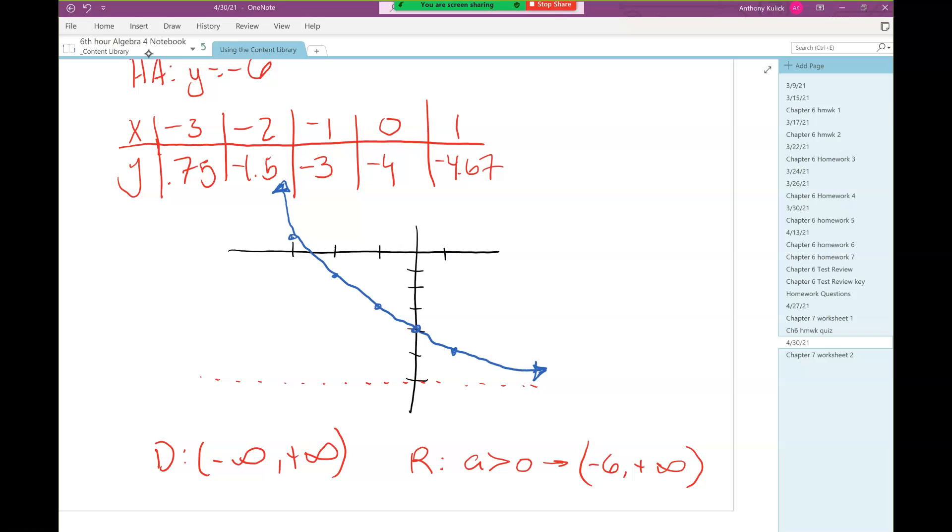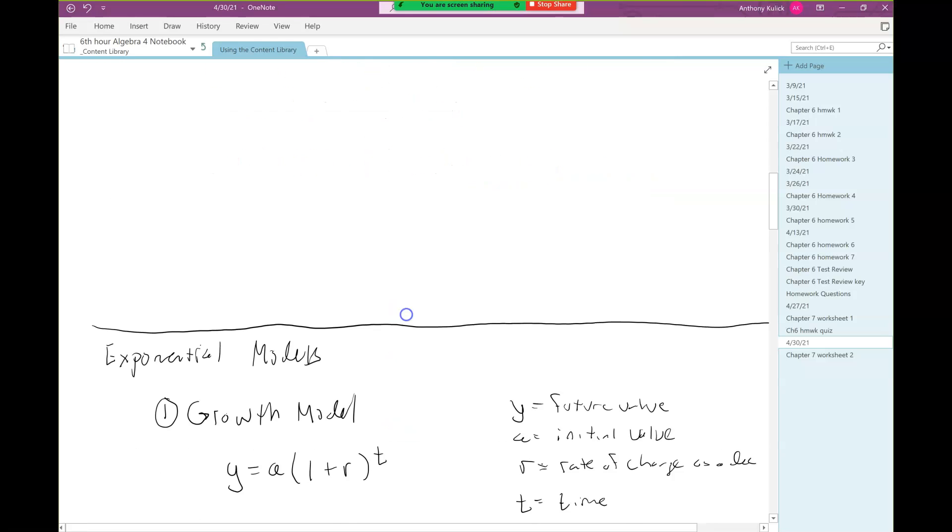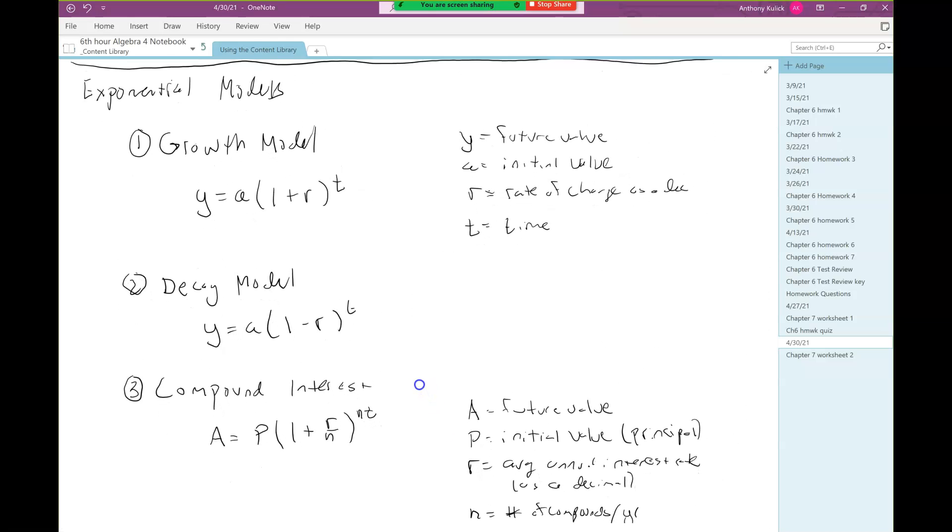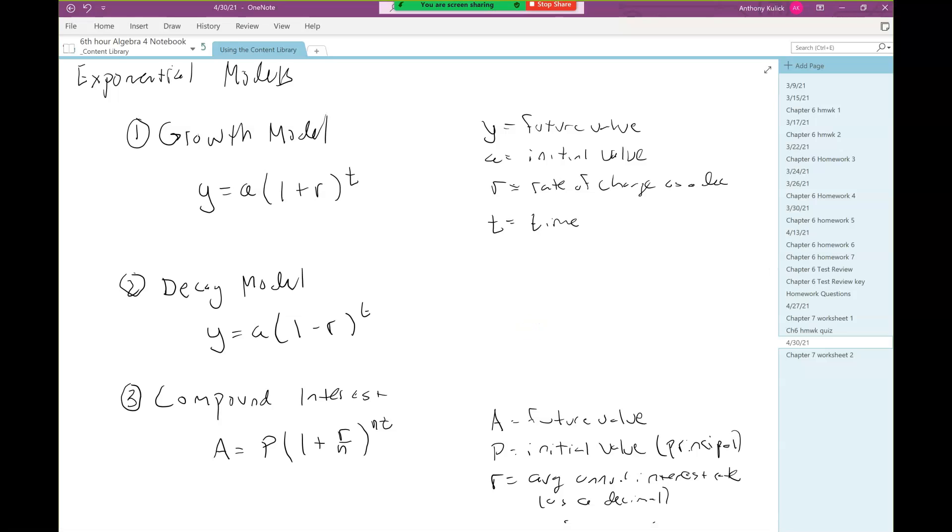Today in the lecture, we'll talk about using exponential models. We're going to be answering story problems. There's three exponential models we'll talk about today. There's exponential growth model: y equals a times 1 plus r to the t. And there's decay, exponential decay: y equals a times 1 minus r to the t.